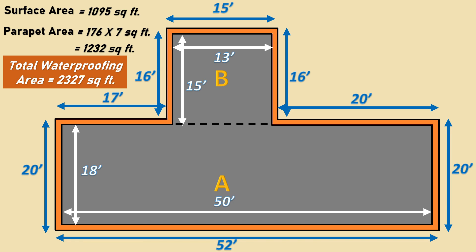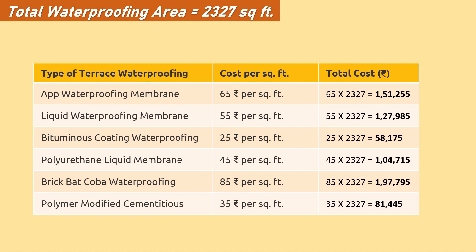Now that we have our area measurement, our next task is to select the type of waterproofing. There are six different types of terrace waterproofing shown in this table — the first column shows the type, the second column shows the per square feet cost, and the third column shows the total cost based on our total surface area. The first kind is APP waterproofing membrane, where a thin film or lamination is formed over the entire terrace to prevent water percolation. It costs around 65 rupees per square feet, so 65 × 2,327 = 1,51,255 rupees total.